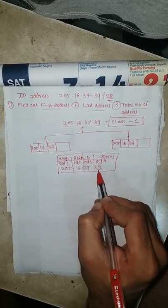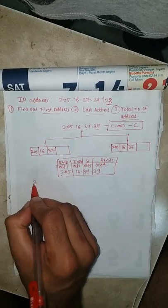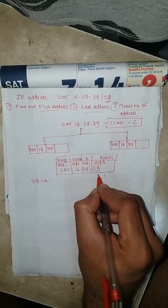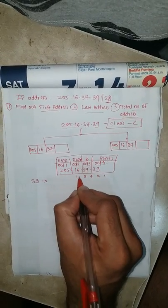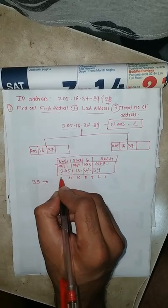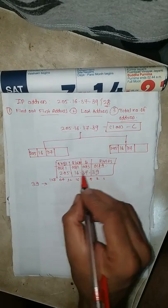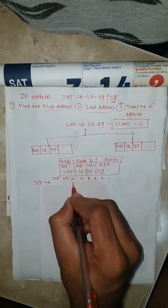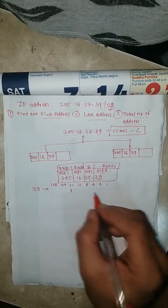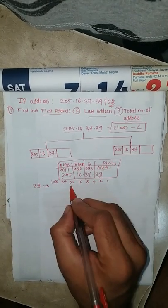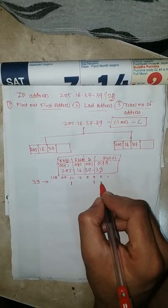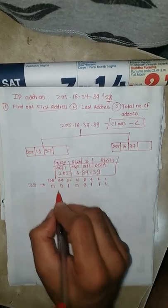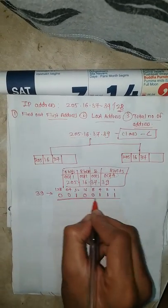We need to convert octet 4, which is 39, into binary. The bit positions are 1, 2, 4, 8, 16, 32, 64, 128. For 39: 32 + 4 + 2 + 1 = 39, so the binary is 00100111. The remaining positions are 0.